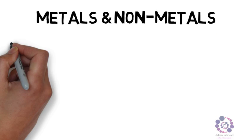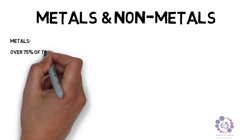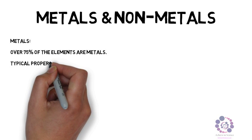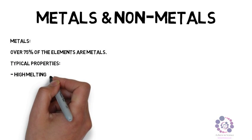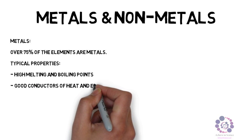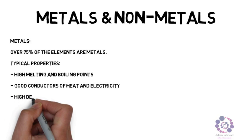Some of the differences include metals first of all. Over 75% of the elements in the periodic table are metals. Their typical properties include that they have high melting and boiling points, they are good conductors of heat and electricity, they have high densities, they are shiny when polished, and they can be hammered into shape.